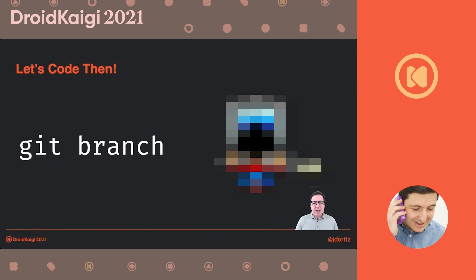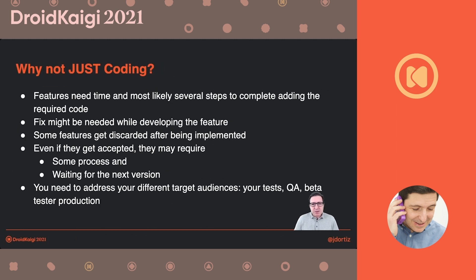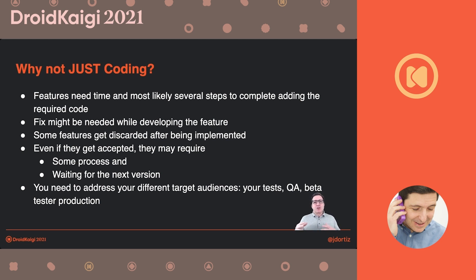Let's say that you are starting a new feature. Usually people create a new branch and they start furiously coding the feature that they have to do. I don't think that's the best way to do it, because features may need some time to be developed. That means there is no single step that will take you to a feature unless it's a very trivial one. You may need to ship some other fixes and integrate with features being developed by other people in your team.